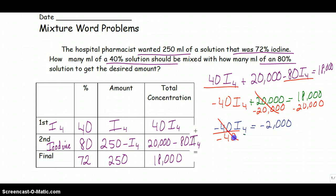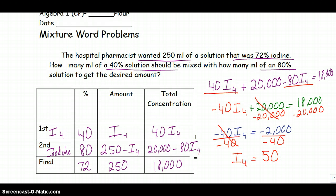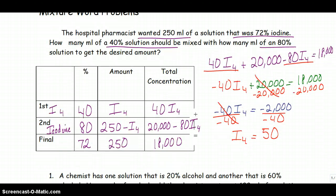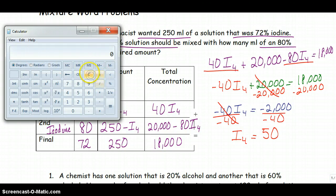I'm going to divide both sides by negative 40. So negative 2,000 divided by negative 40. I'll show you with the calculator. So 2,000 divided by 40 does give me 50, just like I thought.